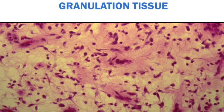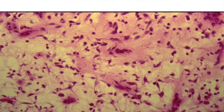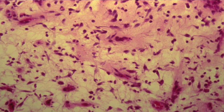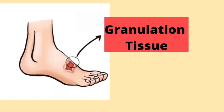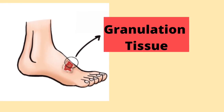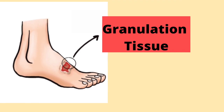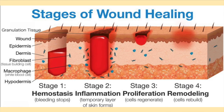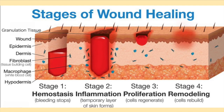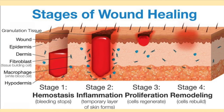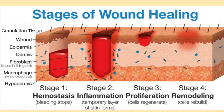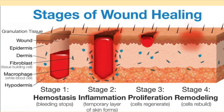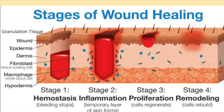Granulation tissue is new connective tissue, which is rich in microscopic blood vessels. This tissue forms on the surfaces of a wound during the healing process. As the body heals, the tissue fills in the injury and may eventually scar over. Through this process, healthy, normal skin is able to replace skin which was damaged.